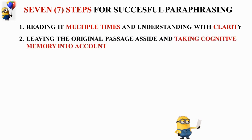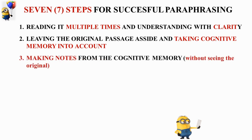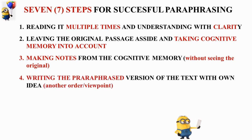Step two: leave the original passage aside. After gaining clarity through multiple readings, leave the text aside and take your cognitive memory into account. The memory of your multiple readings is now stored in your mind in a systematic way. Step three: make notes from that cognitive memory — just from your memory of the multiple readings you did in step one — without touching or seeing the original text you studied.